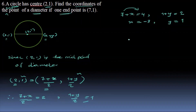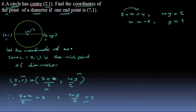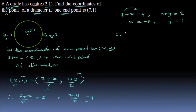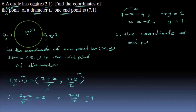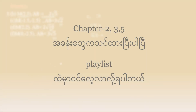So x equals minus 3 and y equals 1. The coordinate of the other endpoint is (minus 3, 1).